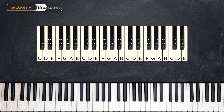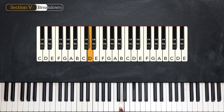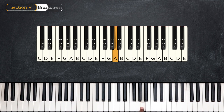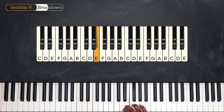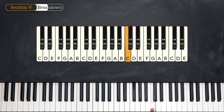Now we're going to quickly talk about the number system. Very simply put, we're going to assign a number to the notes in the scale. For example, in the C major scale, the first note is C, so C is the one. Then we have D, the second note, so D is the two. E is three, F is four, G is the five, A is six, and B is seven. And then the next one is not eight — it's still C, so we call it one again.